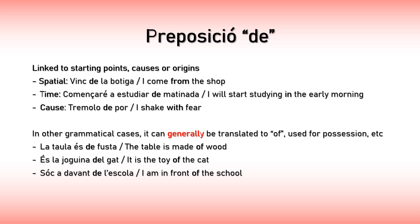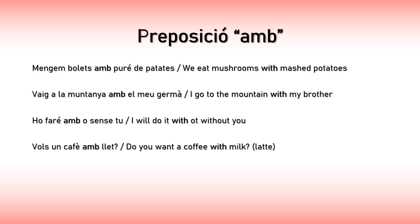Next, preposition AMB, and this is probably the easiest one to translate from English because in more than 95% of the cases you translate it to WITH. 'Mengem bolets amb puré de patates' — 'We eat mushrooms with mashed potatoes.' 'Vaig a la muntanya amb el meu germà' — 'I go to the mountain with my brother.' 'I will do it with or without you' — SENSE is another preposition which means without. 'Vols un cafè amb llet?' — 'Do you want a coffee with milk?' In Catalan you literally say a coffee with milk.